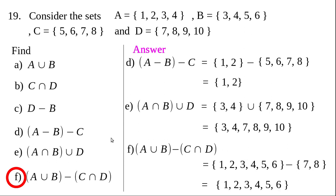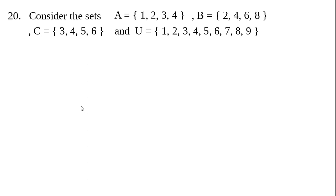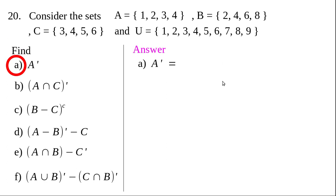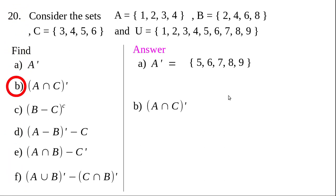Now question 20. Given sets A, B, C, and U, some questions are given. For question (a): A dash — A dash means the set of all elements in U which are not in A. Delete elements 1, 2, 3, 4 from U; the answer is {5, 6, 7, 8, 9}. For question (b): (A intersection C) whole dash — first find A intersection C.